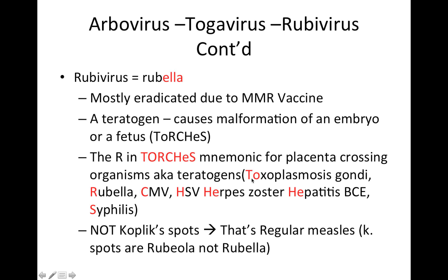In the TORCHES mnemonic: TO is for Toxoplasma gondii, R is for rubella, C is for cytomegalovirus, HE is for herpes simplex virus — and HE also stands for herpes zoster and hepatitis B, C, and E — and S is for syphilis.